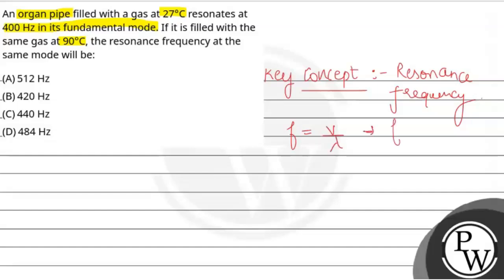Therefore f is proportional to v. Now v is the speed of the wave. So v is equal to under the root of t.